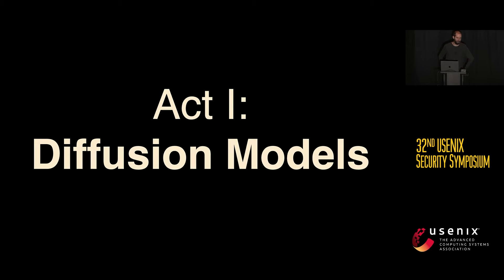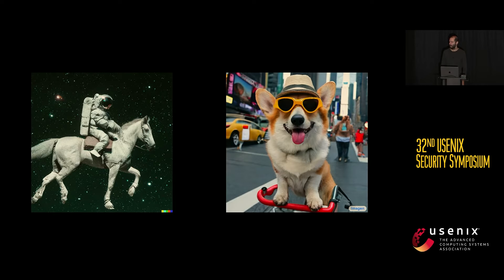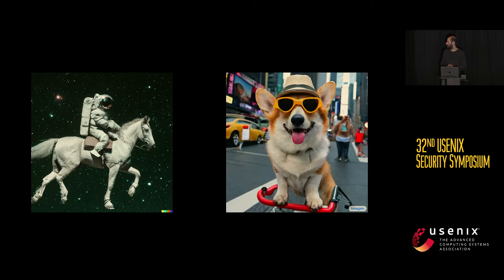Diffusion models are a new kind of neural network that's emerged in the last couple of years, and you may have seen them a lot over the last year for all of these high-quality image generators. If you've seen any of these fancy images in the last six months or a year, it's probably been generated by a diffusion model. What really sets them apart is that they're really, really high quality — they can produce high-quality images of astronauts riding horses in space, or corgis in Times Square in a shopping cart wearing sunglasses and a hat.